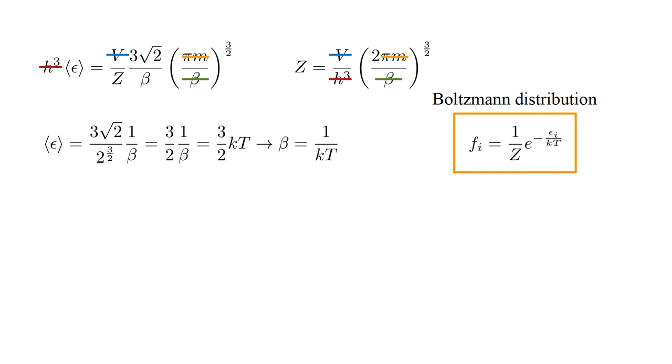This gives us our final version of the Boltzmann distribution. F_i equals one over Z, e to the minus epsilon_i over kT. The probability an atom will have a kinetic energy epsilon decreases exponentially with energy. The decrease is more rapid at lower temperatures, and less rapid at higher temperatures.